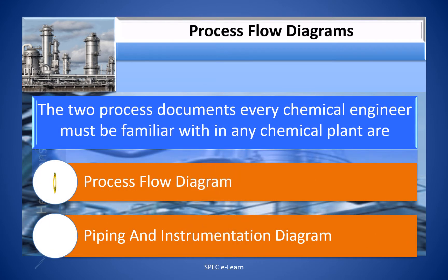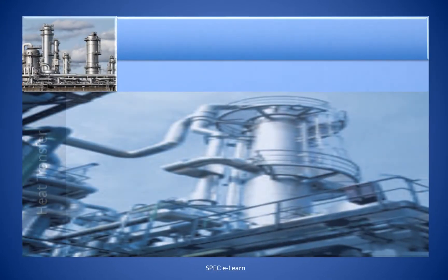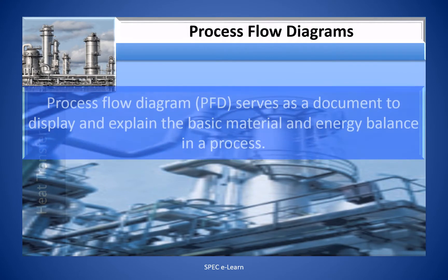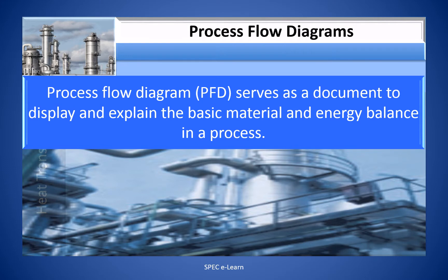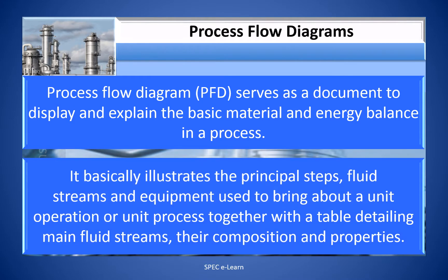The two process documents every chemical engineer must be familiar with in any chemical plant are process flow diagram and piping and instrumentation diagram. The process flow diagram is different from a simple flow sheet. Flow sheeting is the first step in the development of process design of a chemical process. The generation of process drawings such as process flow diagram and piping and instrumentation diagram begins when the flow sheeting of a chemical process is complete. Process flow diagram serves as a document to display and explain the basic material and energy balance in the process.